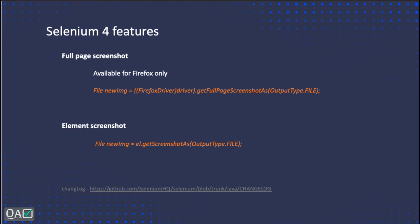Element screenshot is important because sometimes you don't want a full page screenshot. Let's say a test got a bug and you want to give that to the dev team to fix, or you want to raise a defect. Previously you had to use tools like Windows or Mac to crop the required element and then attach it. With element screenshot you only capture the intended element, saving time.